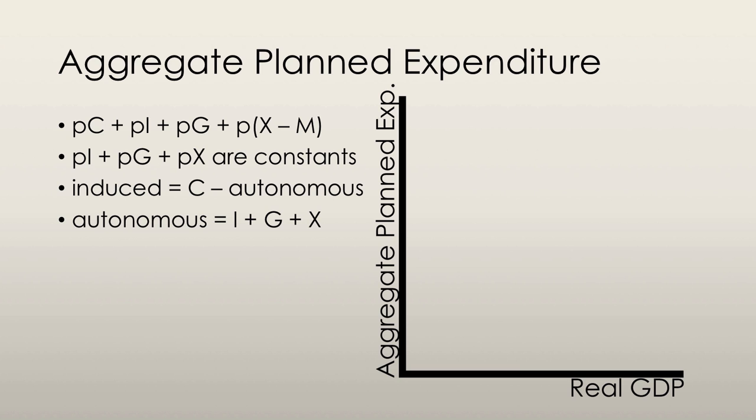The aggregate expenditure curve is plotted comparing planned expenditure on the y-axis with real GDP on the x-axis. Let's take a look at how we actually form this curve.